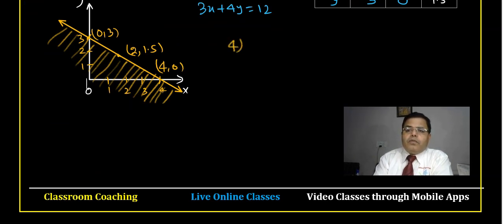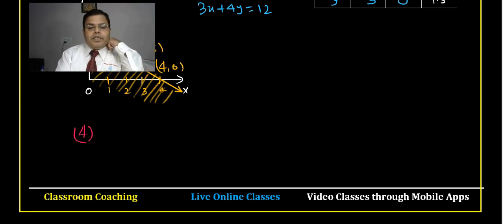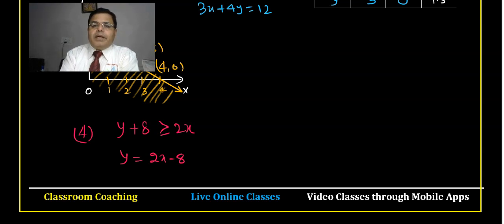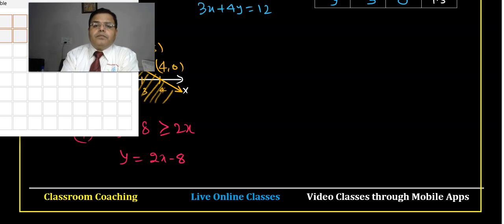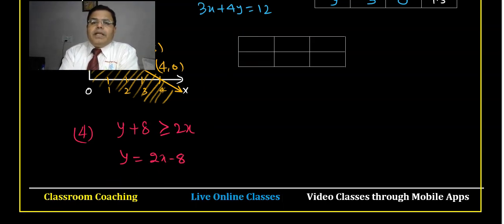Question number four: y plus eight is greater than 2x. We can write y equal to 2x minus eight and make a table of values. Put x equal to zero: y is negative eight. Put y equal to zero: x is four.